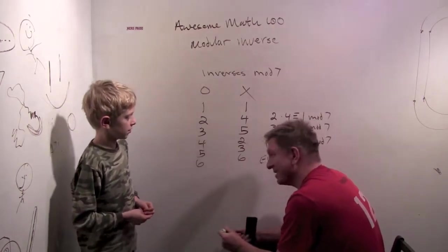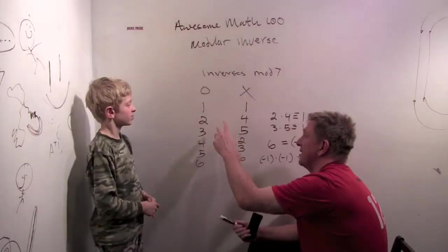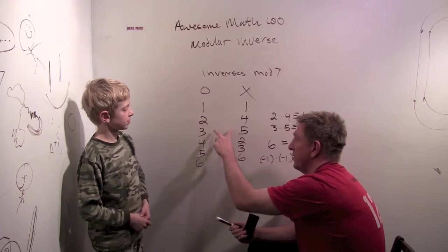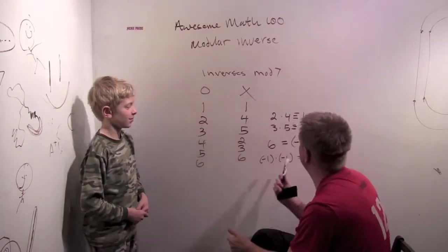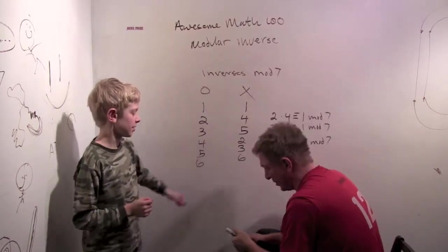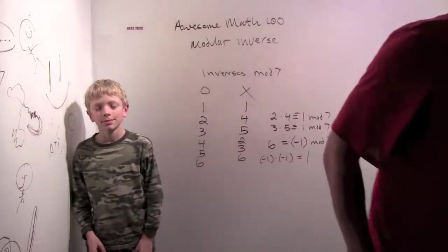But that was really proud of you for noticing that. High five. Two and four. Three and five. Six and six. One and one. Those match somehow. And they match because six is minus one. Cool. Alright. Good job. Inverses in modular arithmetic.